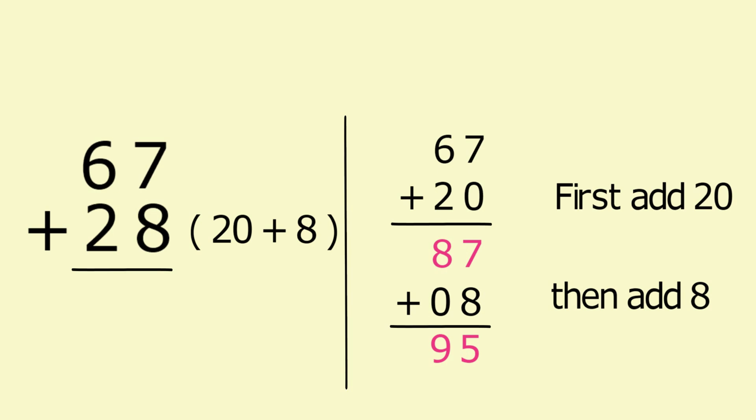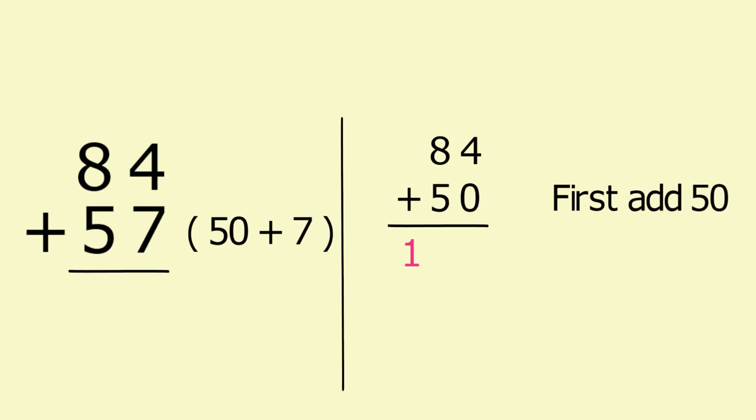Now try one on your own. Pause the video and mentally calculate from left to right, then resume the video to see how we did it. 84 plus 57. Here is the hint: we can write 57 as 50 plus 7. Now pause the video and mentally calculate it. How was that? You added 84 plus 50 which is equal to 134, and added 7 again to 134 to get 141. Right? Did you get the same answer? I hope you did. Practice will make you perfect.